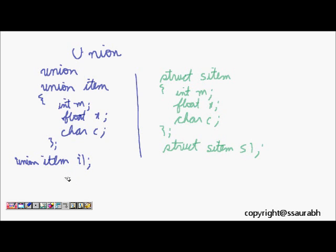Now let's see what will be the difference. Let's assume that int is of 2 bytes, float is 4 bytes, and char is 1 byte. What will be the memory structure of a union?